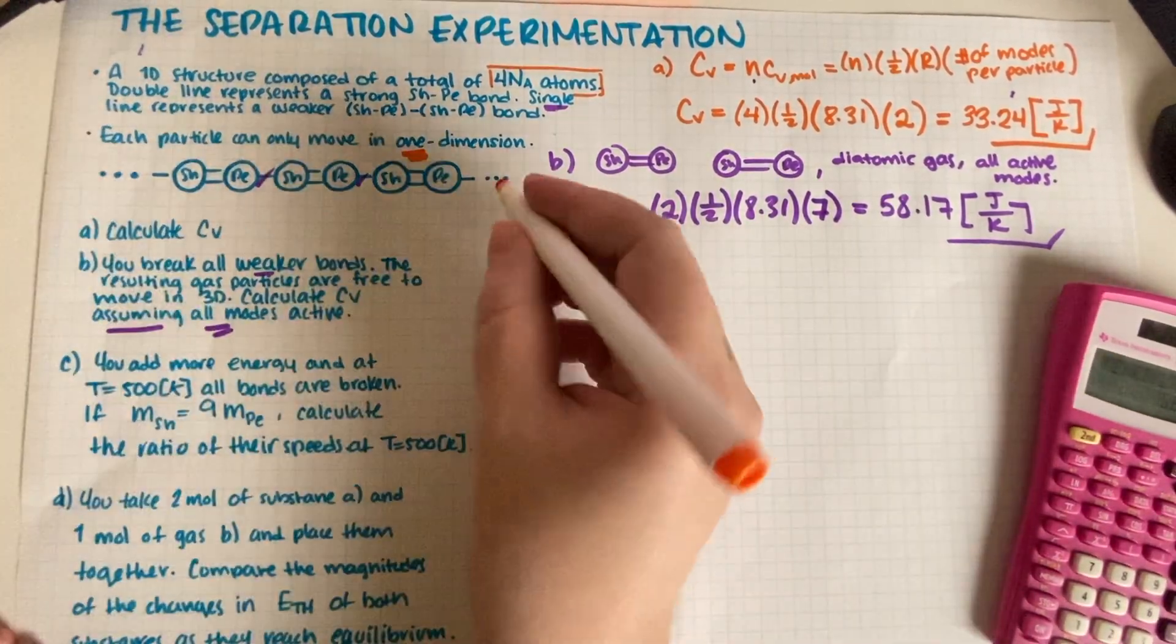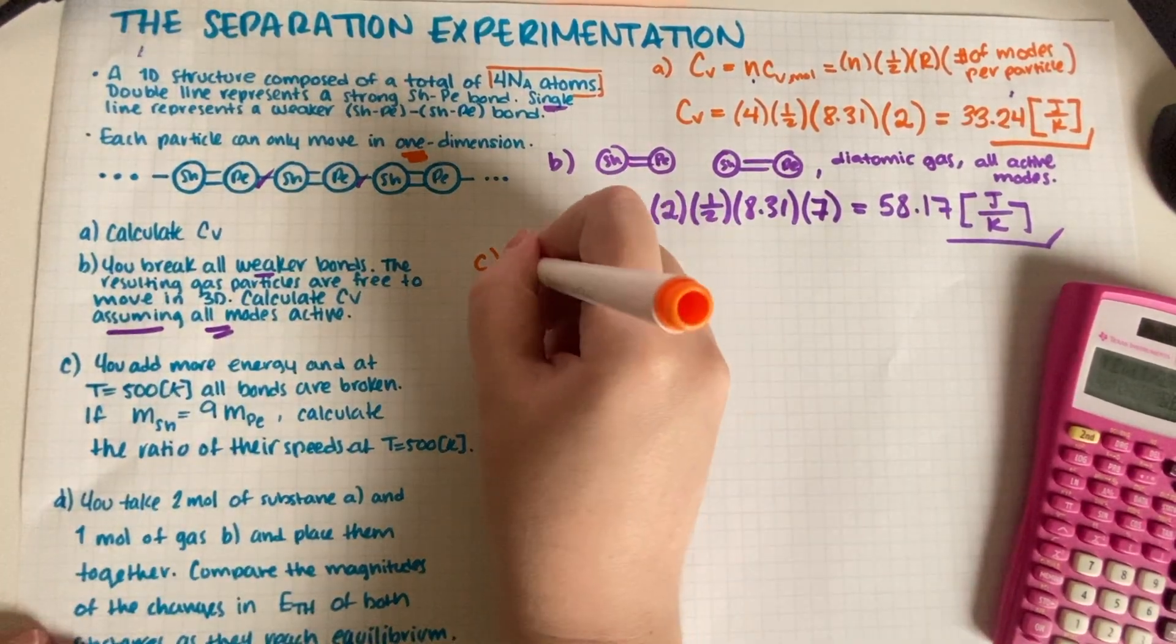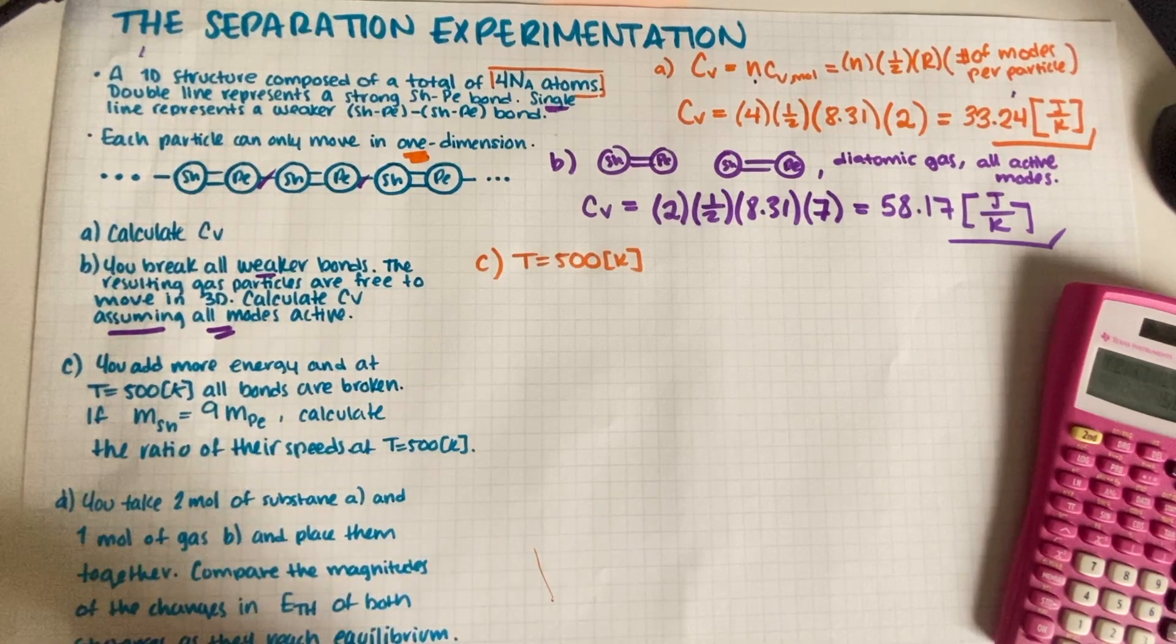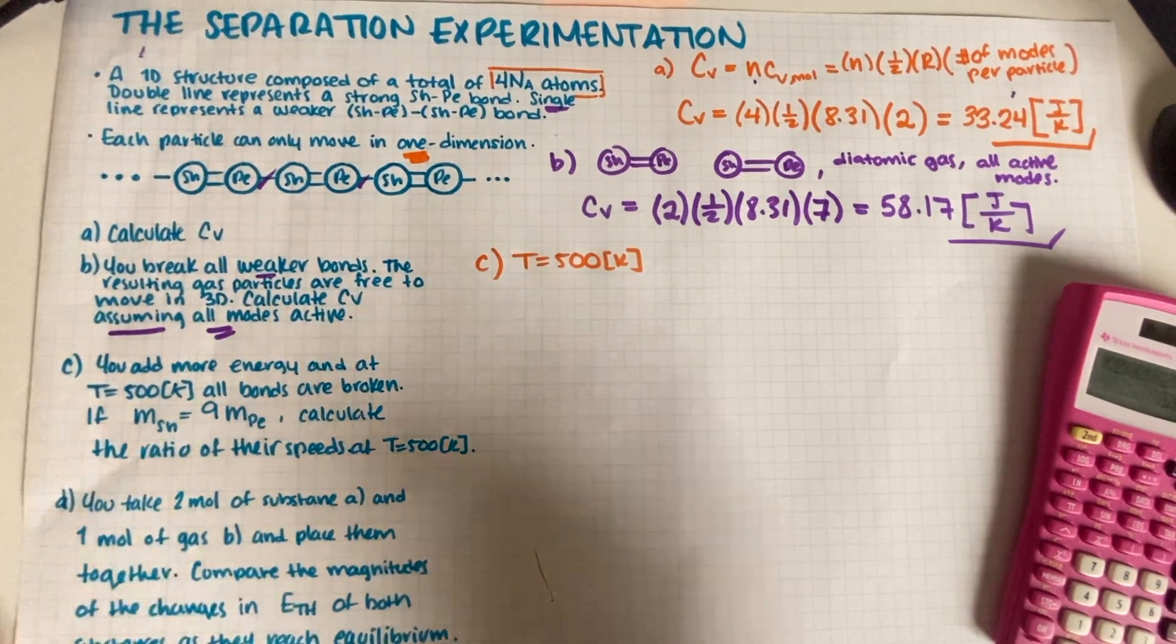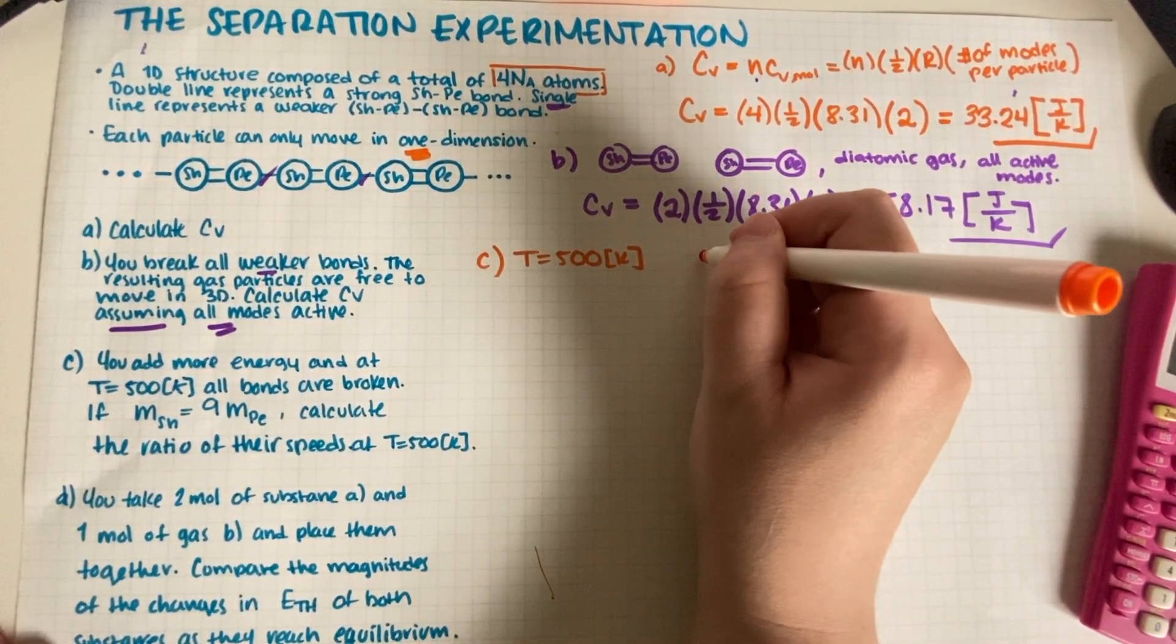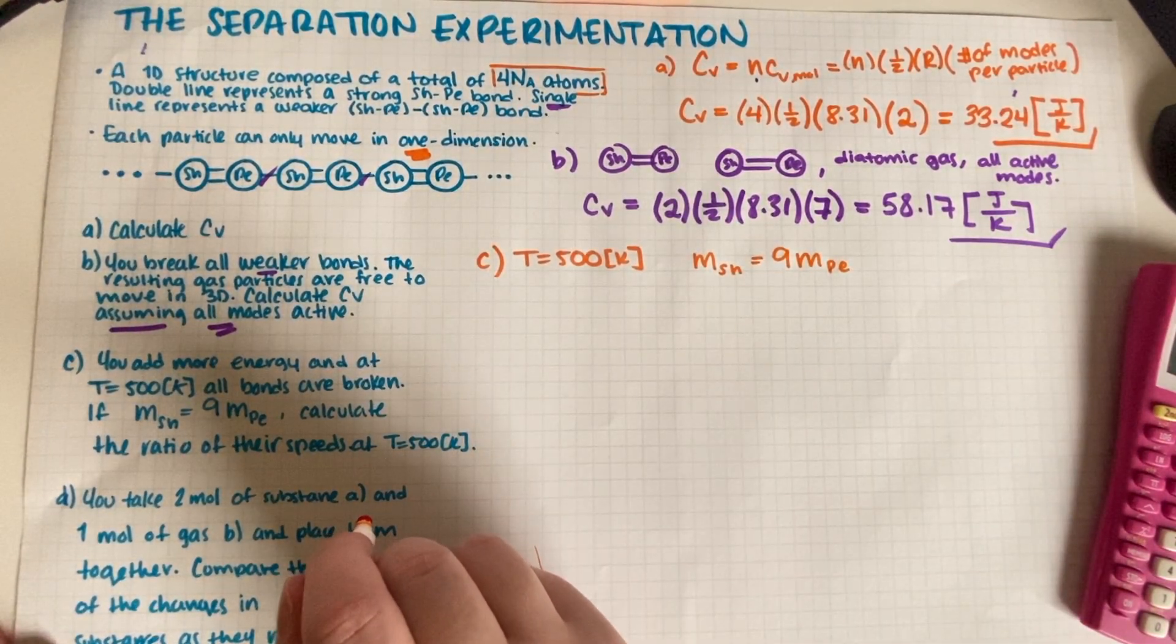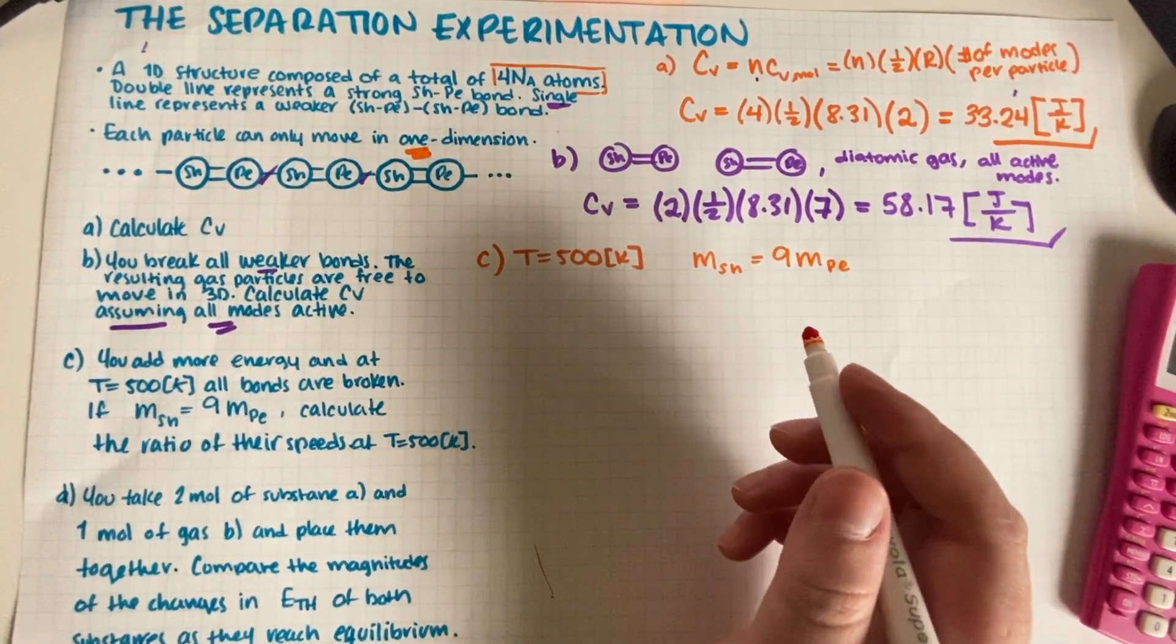All right, so now we're gonna do Part C. Part C says you add some more energy and notice that at T equals 500K all of the stronger bonds are broken as well. If the mass of sheldonium is nine times the mass of cupertonium, calculate the ratio of their speeds at T equals 500K. Okay, so the mass of sheldonium is nine times the mass of cupertonium.